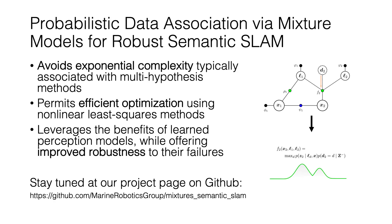By making use of probabilistic data association and building on ideas from robust SLAM, we've presented a semantic SLAM approach that mitigates the complexity of the data association problem. We implicitly represent multiple data association hypotheses in a way that supports optimization using nonlinear least squares methods. This allows us to leverage the benefits of learned perception models for navigation while being robust to their potential failures. For more information, please check out our paper and stay tuned for updates at our project page on GitHub. Thanks, everyone.